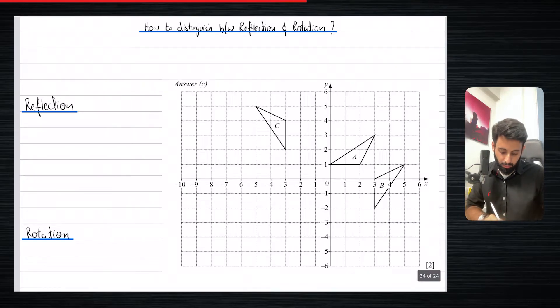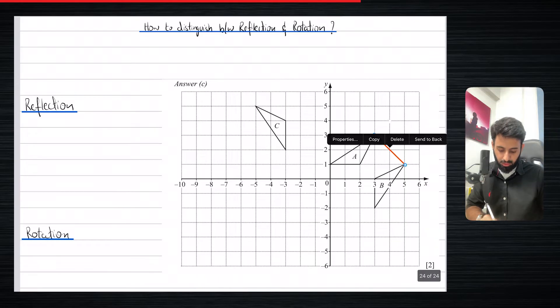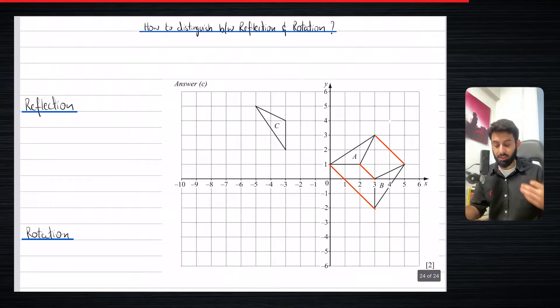So let's start with A and B. When I join the corresponding points of A and B, meaning when I join the object with its respective image, let's see what all the lines look like. So you can see that all the lines are parallel. So whenever that's the case, whenever all the lines happen to be parallel, it's definitely reflection.